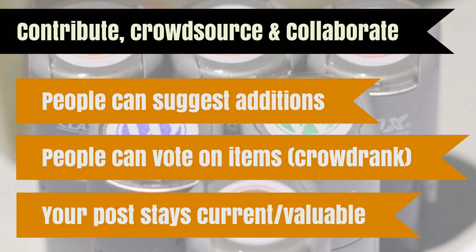One big deficiency with static lists is that they don't change — we call it list rot. Your lists begin to age from the moment you publish them. Listly solves this by allowing people to make suggestions and extend your list, and to vote on items so the most popular appear at the top. New readers see the latest additions and corrections, giving a better experience, keeping your blog alive longer, and making your content more valuable over time. Every list is a community waiting to happen.